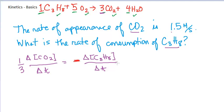And so if I want to calculate the change in concentration of C3H8 with respect to time, I would calculate it according to this part of the equation. That is one third of 1.5 molarity per second. My final answer to two sig figs, then, is 0.50 molarity per second. That is the rate of consumption, a positive numerical value of C3H8.